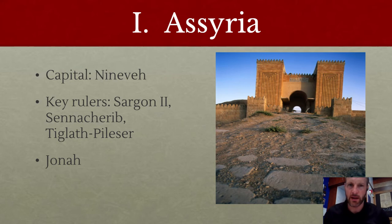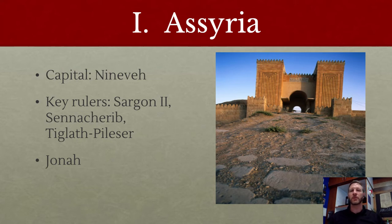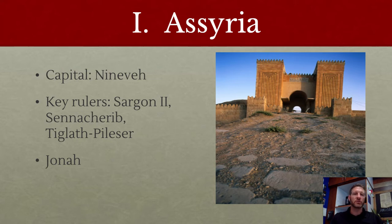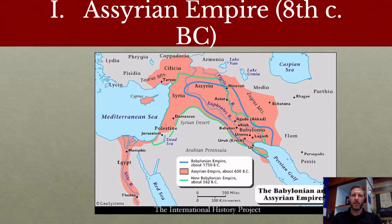Let's talk first about Assyria — these are listed in chronological order. The nation of Israel had key interactions documented in the Old Testament with three major empires; we've already talked about Egypt, so now we'll jump to Assyria. The capital of Assyria is the famous Nineveh of Jonah lore — it's up at the top of the Fertile Crescent. You can see Nineveh up on the banks of the Tigris River, where Jonah was told to go and call them to repent.